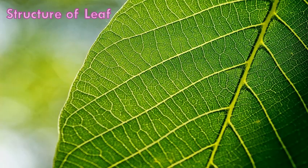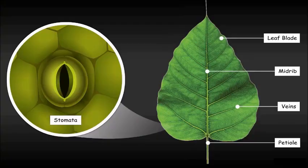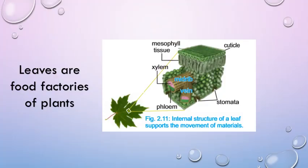Thirdly and lastly, we will discuss the structure of the leaf. The structure of leaf may consist of leaf blade, midrib, veins, petiole, and stomata. Many stomata are present in the lower surface of each leaf. There can be as many as 200 stomata or more in an area equal to the size of the head of a pin. Leaves are the food factories of plants, which means the food is prepared in the leaves.